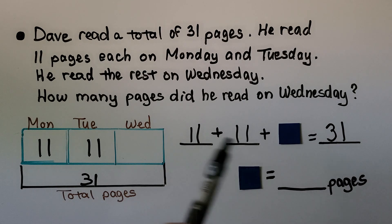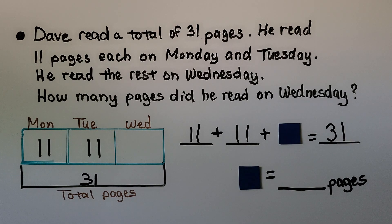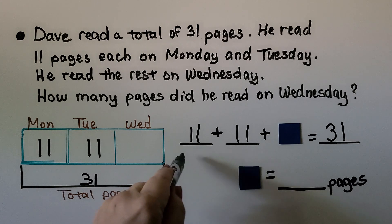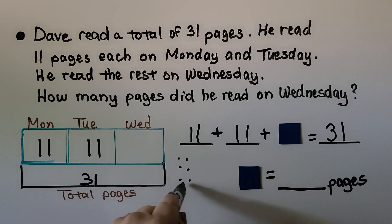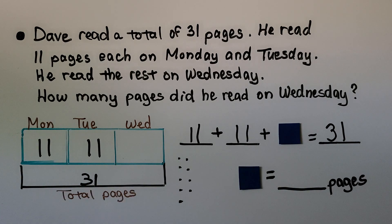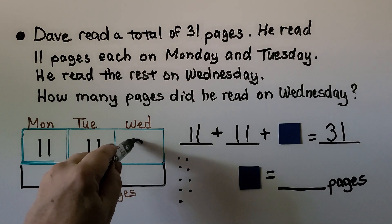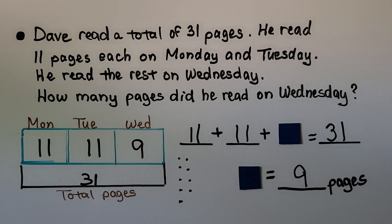We can add 11 plus 11 using mental math. That would be 22. So 22 plus some number is equal to 31. We can count on. We could use counters. We have 22, 23, 24, 25, 26, 27, 28, 29, 30, 31. That's 9. That means he must have read 9 pages on Wednesday. So that little square is equal to 9 for 9 pages.